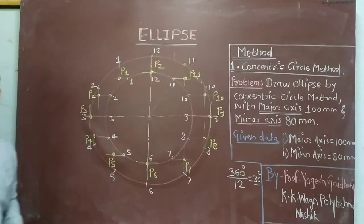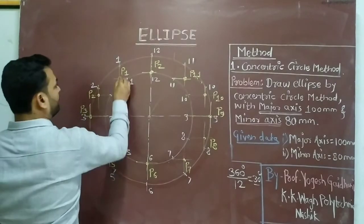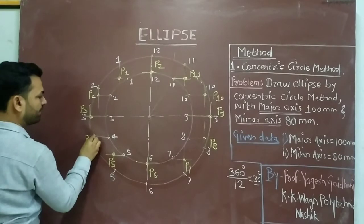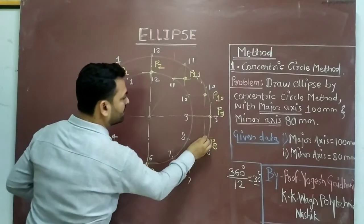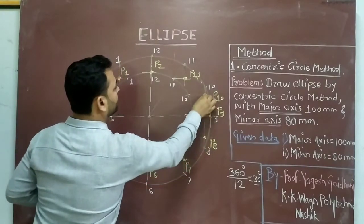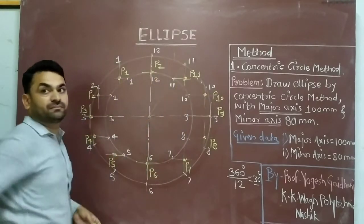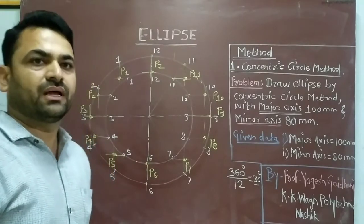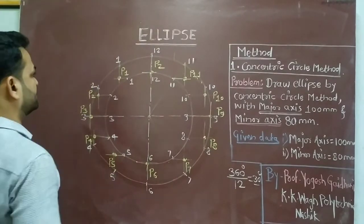So like this we get all the points: P1, P2, P3, P4, P5, P6, P7, P8, P9, P10, P11, and P12. This is step number 3, and now we are moving towards the last step to draw the ellipse.